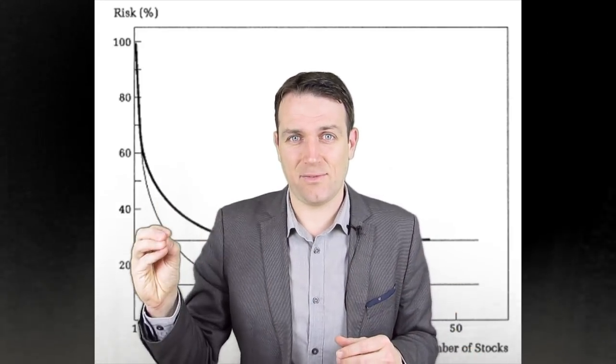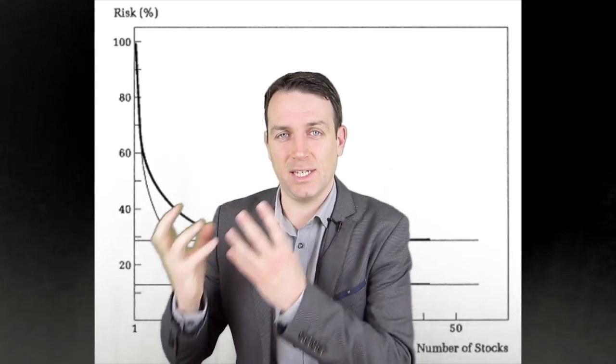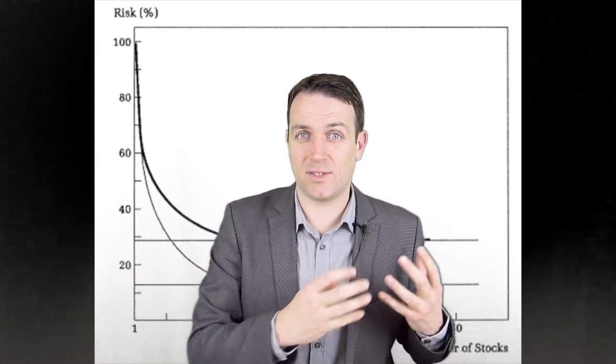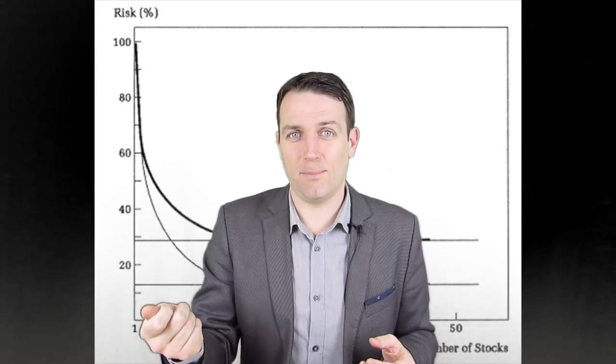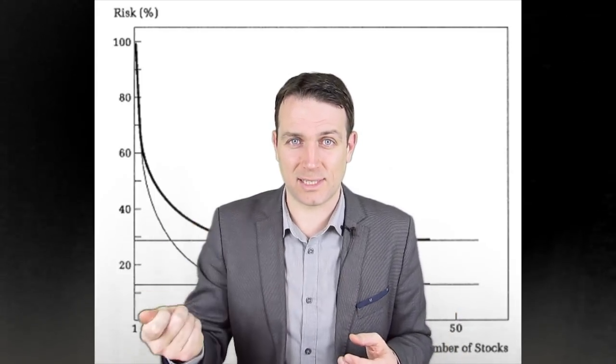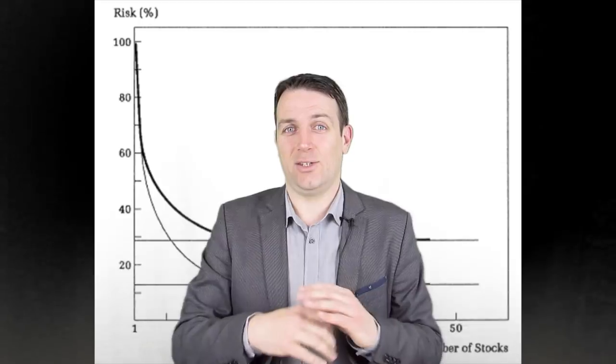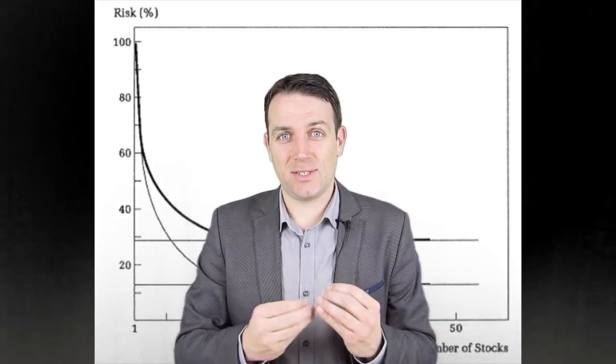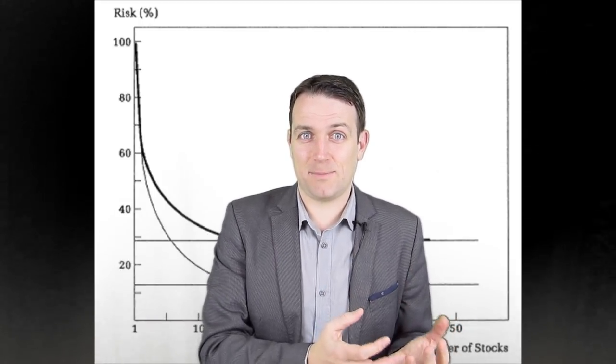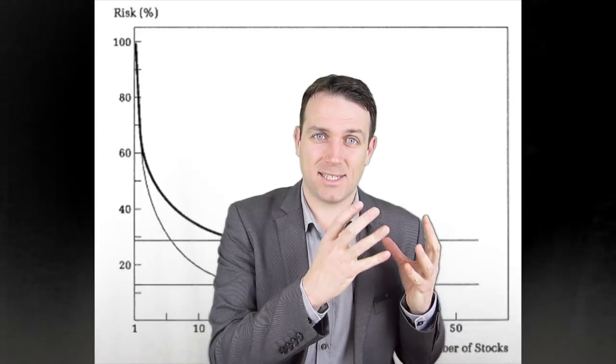However if you're 60, 65 you cannot have everything in stocks and risk a 50 percent, 70 percent downturn because then yes you can buy more but if you are forced to sell to retire then you're toasted. So it's very interesting the life concept that Burton Malkiel discusses in his books.